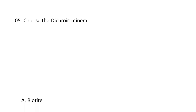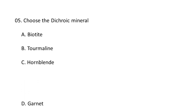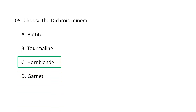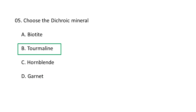Next question: Choose the dichroic mineral — A. Biotite, B. Tourmaline, C. Hornblende, D. Garnet. The correct option is B. Tourmaline. Tourmaline is strongly dichroic. It is a characteristic mineral in granite pegmatites and is an accessory mineral in granite, granodiorite, and related felsic rocks.